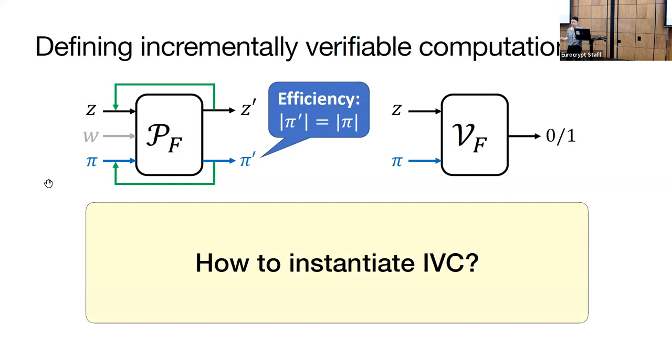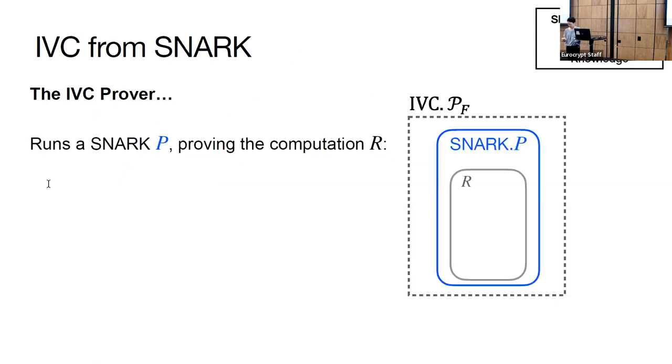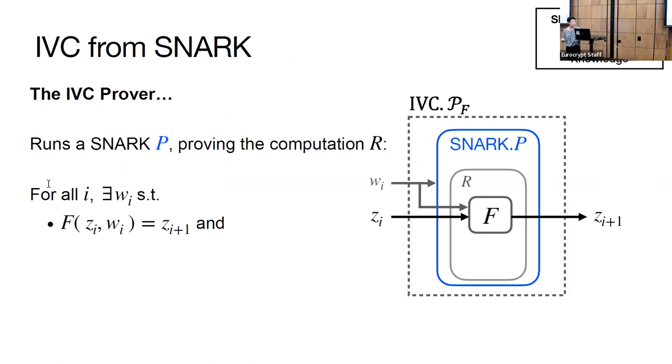This leads us to the question, how do we instantiate IVC? The main way to instantiate IVC is using SNARKs. To see how this works, we'll zoom into what the IVC prover is doing. The IVC prover runs the SNARK prover for a computation R, which I have as the gray box in the diagram. At every time step i, there is a witness wi such that the function f is computed correctly, and the SNARK verifier accepts the old state and proof pair zi, pii. Notice that the SNARK prover proves that the SNARK verifier accepts. The IVC proof is the SNARK proof. In particular, SNARKs have their own constructions and impossibility results, and we should take a look at those.